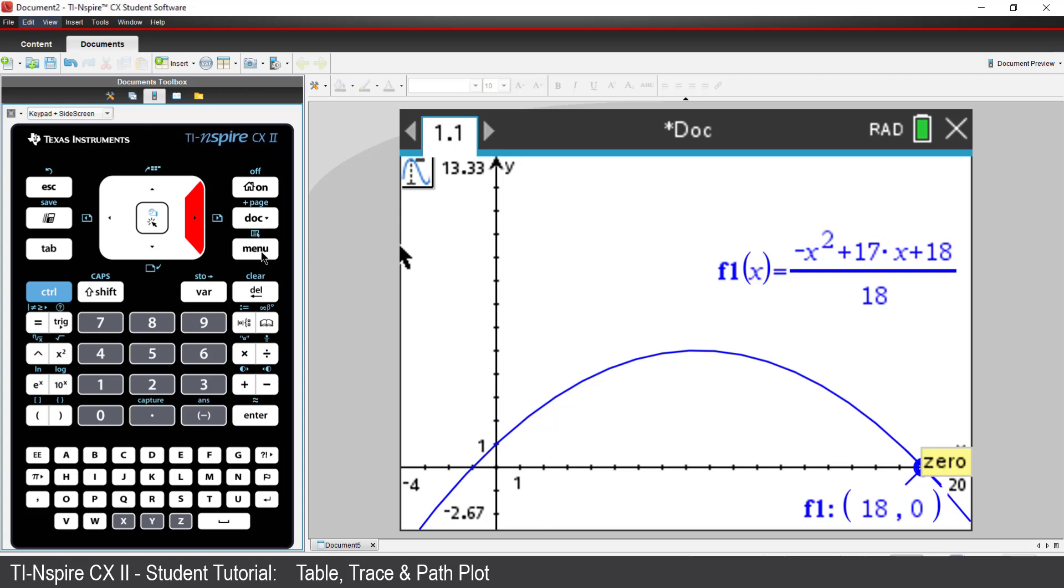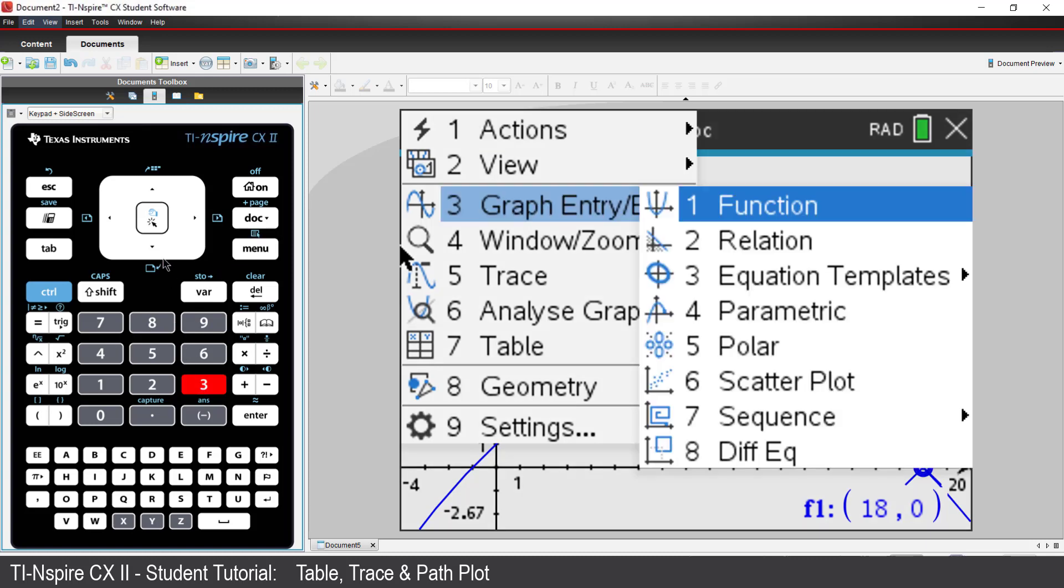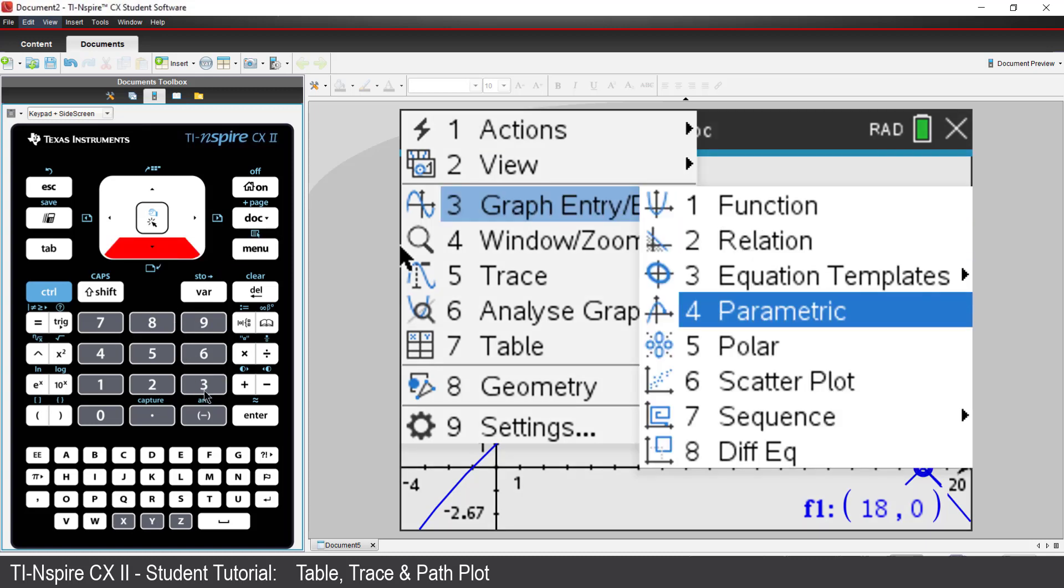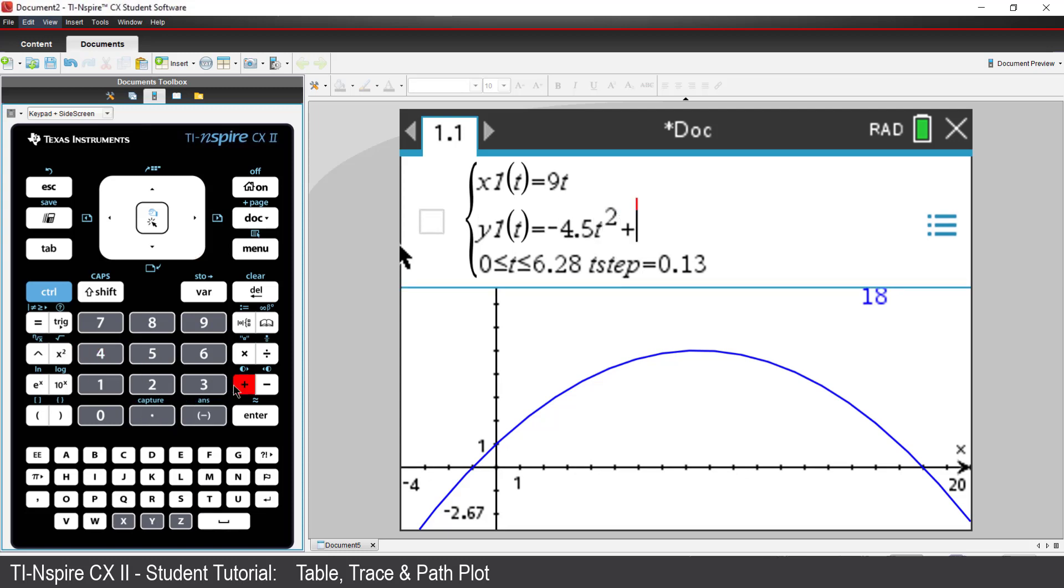The projectile's motion can also be represented as the parametric equation. I'll say x of t equals 9t and y of t equals negative 4.5t squared plus 8.5t plus 1.